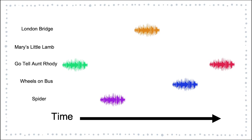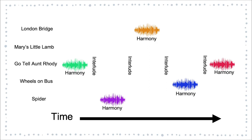It may be that you want to begin with Go Tell Aunt Rhody played on one instrument, followed by the Itsy Bitsy Spider played on a completely different instrument, or it could be all the same instrument. Then you're going to choose an accompaniment — a harmonic pattern — to pair with the melody. It can be one of many, many different choices. All the harmony patterns work with all the melodies.